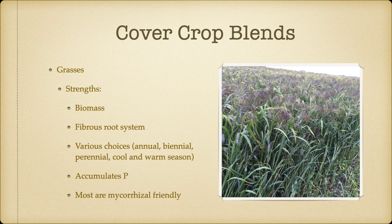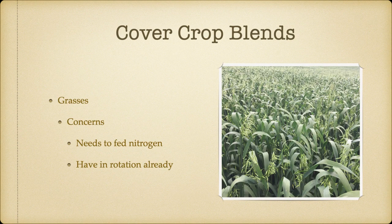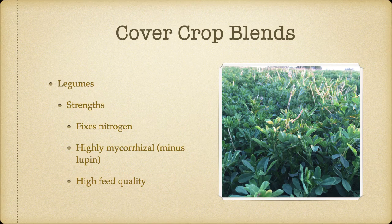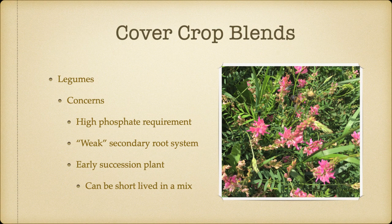Going through some of these functional plant groups. Your grasses — the strength is biomass and a big fibrous root system. We have lots of choices of annuals, biennials, perennials of cool and warm season species. Grasses will accumulate phosphate and most grasses, as long as we're not putting a fungicide seed treatment on, are mycorrhizal friendly. The negative is they love nitrogen, and we already have a lot of grasses in our rotation. Our legumes — the strength is they're nitrogen fixers, highly mycorrhizal (minus the lupins), and they produce very high feed quality. The concerns are a high phosphate requirement in order to fix nitrogen, and a relatively weak secondary root system, which is why they're highly mycorrhizal.